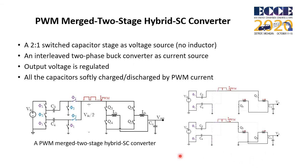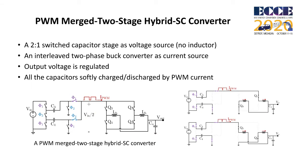The merged two-stage hybrid switch capacitor converter with PWM soft-charging has a similar structure. The current source is performed by an interleaved two-phase buck converter. The output voltage can be regulated by the buck stage. Also, there are no decoupling capacitors between the two stages. The buck inductor is large and the current waveform is a square-pause wave. All the capacitors are charged and discharged by the PWM current.